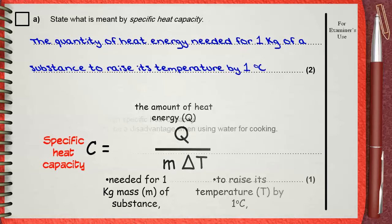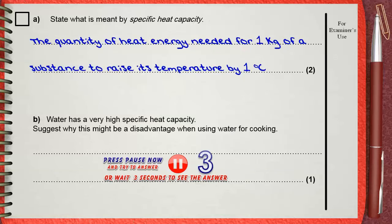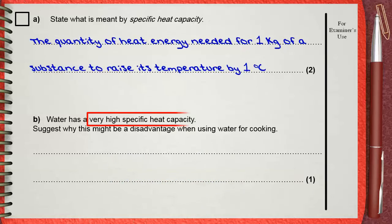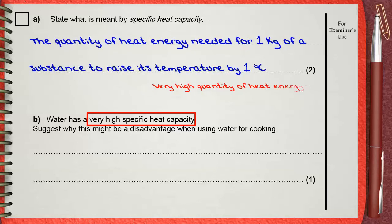Question B. Water has a very high specific heat capacity. Suggest why this might be a disadvantage when using water for cooking. What does very high specific heat capacity mean? From the definition we just wrote before, very high specific heat capacity means that you will need a very high quantity of heat energy for 1 kilogram of substance to raise its temperature by 1 degree Celsius.